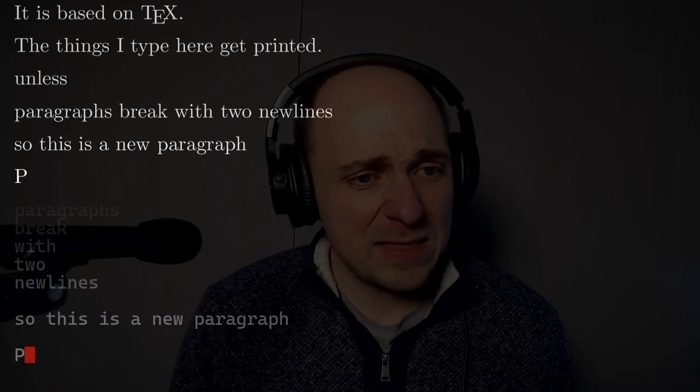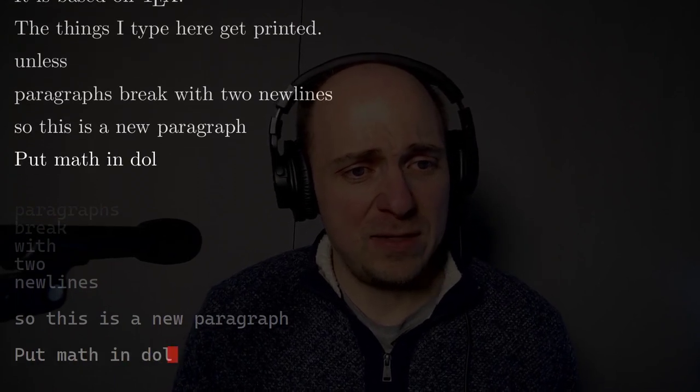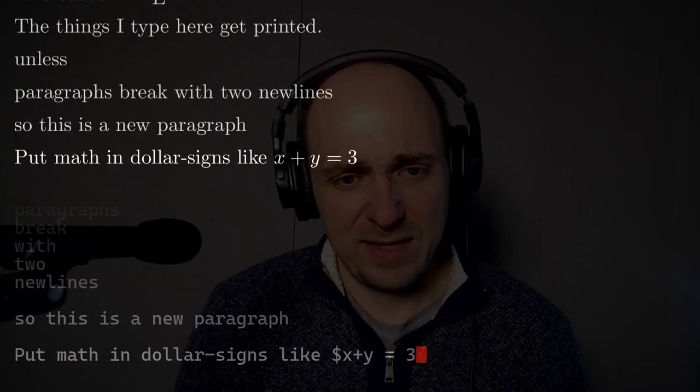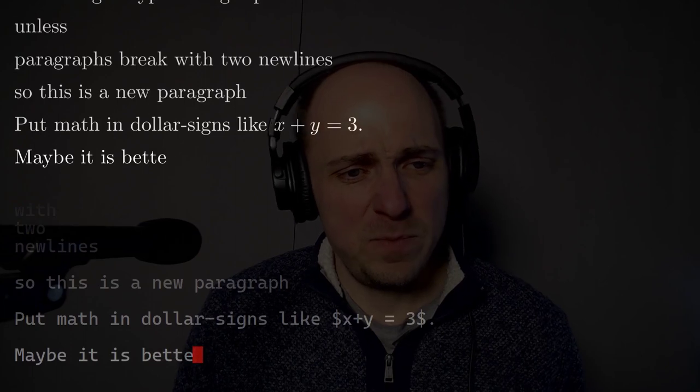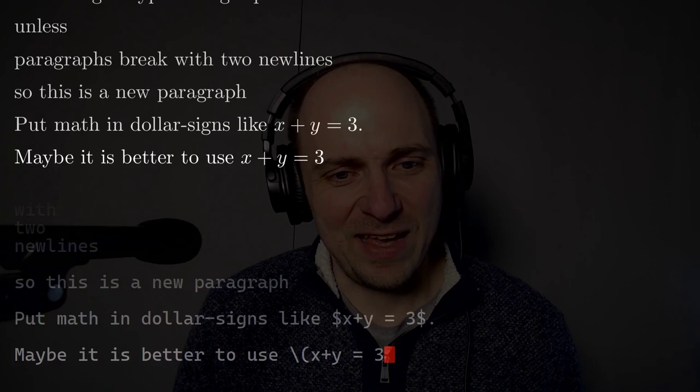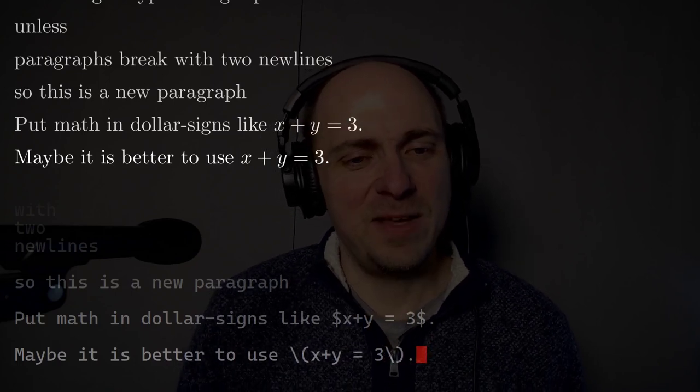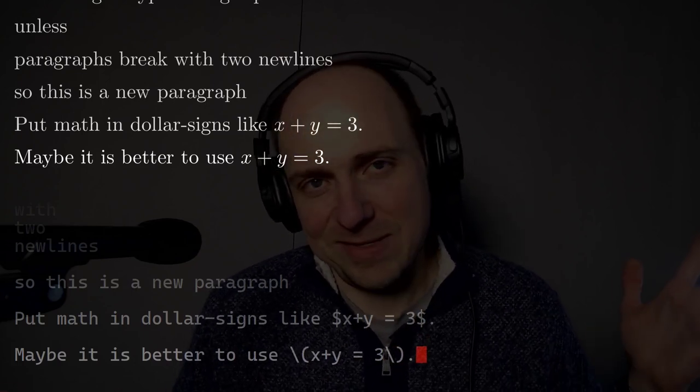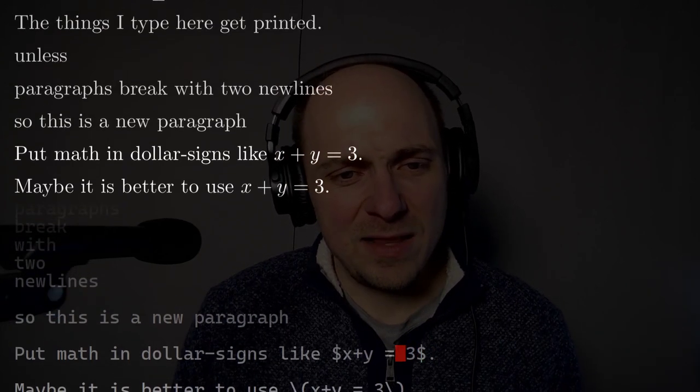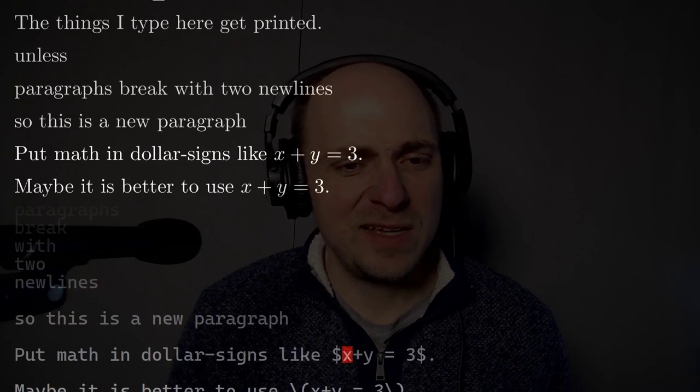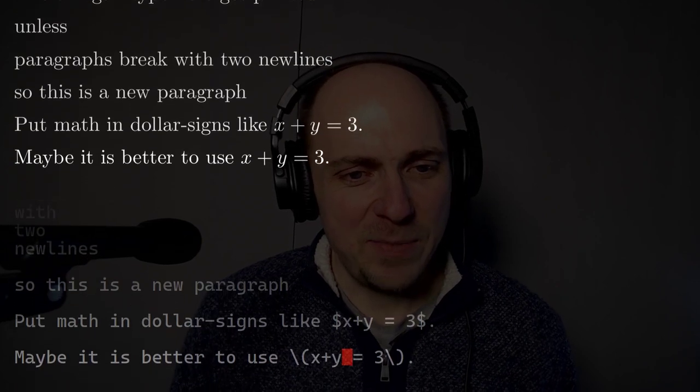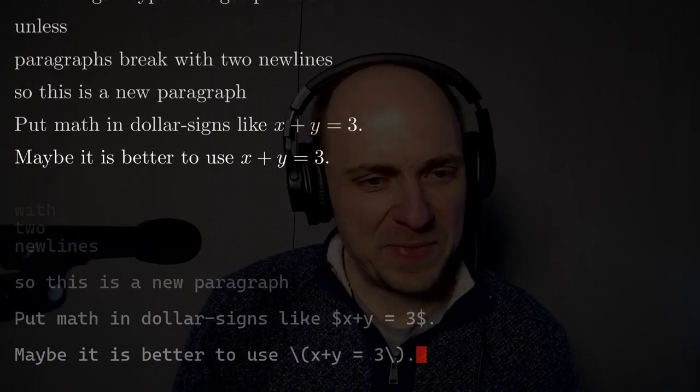If you want to see some mathematics, you put the math in, well, one thing you can do is put it in dollar signs like this. Maybe it is better to use something like this, where I've got a slash open paren x plus y equals three, some example mathematics slash close paren. Just because with the dollar signs, it can be a little bit confusing because a beginning and ending delimiter that is exactly the same thing. So I think the backslash open paren backslash close paren is maybe a little bit safer.